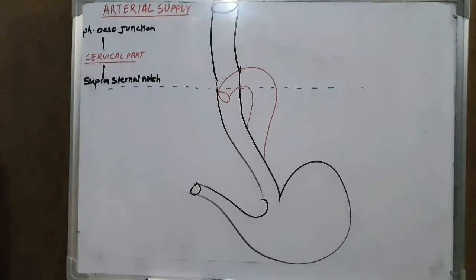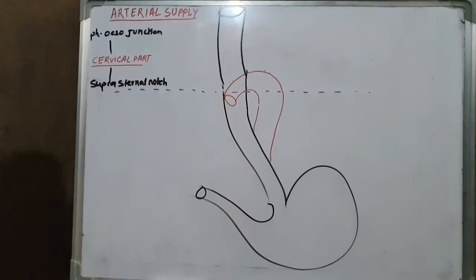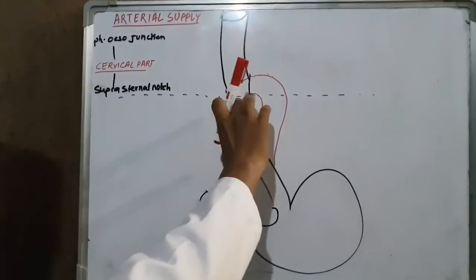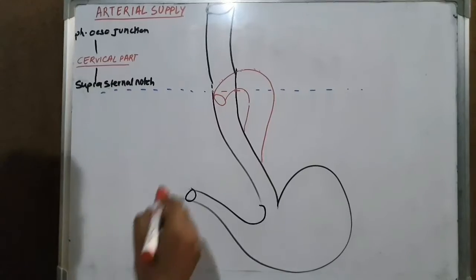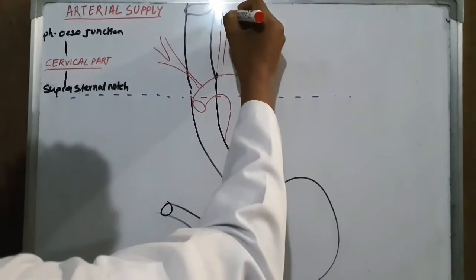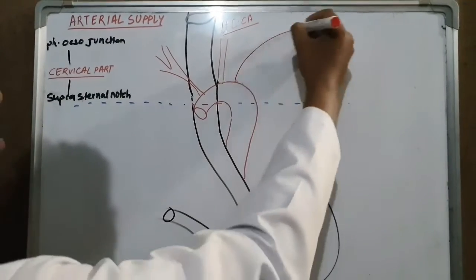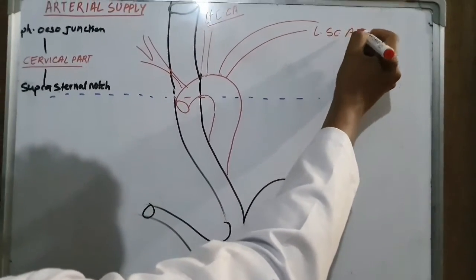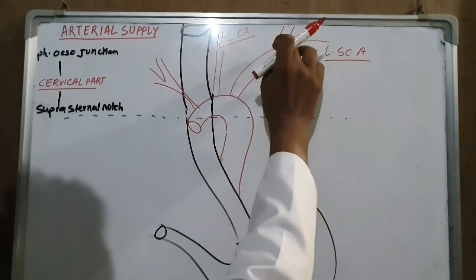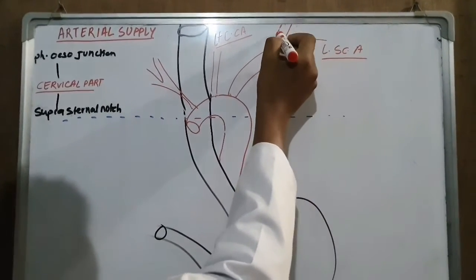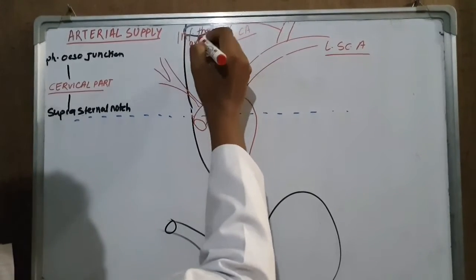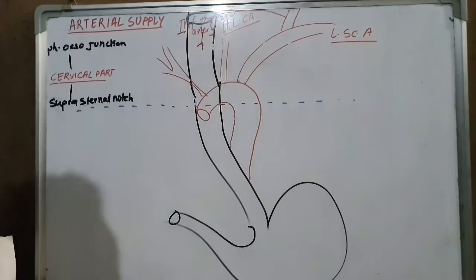Now the arterial supply of the oesophagus. We divide it into three parts: the cervical part, extending from the pharyngeal junction to the suprasternal notch; the thoracic part; and the abdominal part. The cervical part is supplied by the inferior thyroid artery, which is a branch of the thyrocervical trunk, itself a branch of the left subclavian artery.